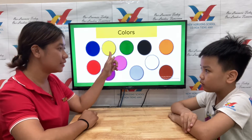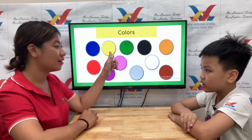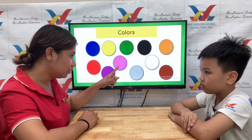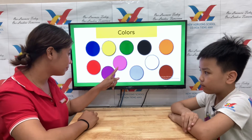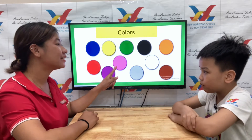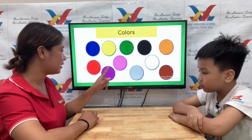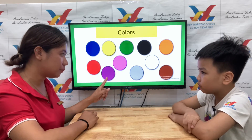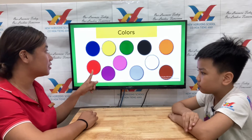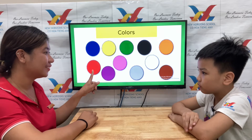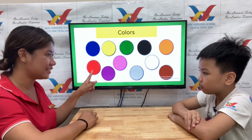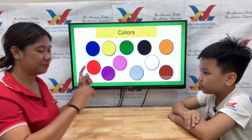What color is this? It's yellow. Is this purple? No. What color is this? Pink. Good. Is this purple? Yes. Is this yellow? No. What color is this? Red. Perfect. Good.